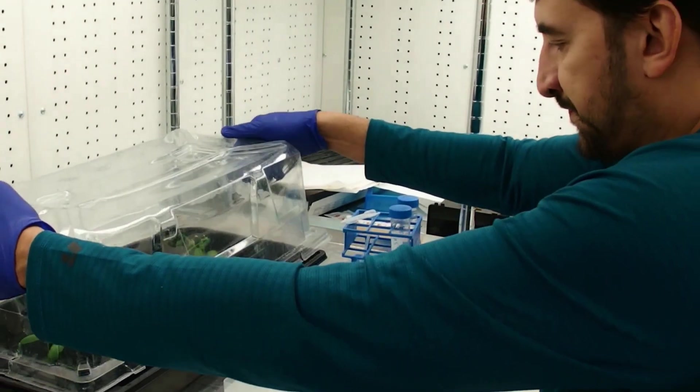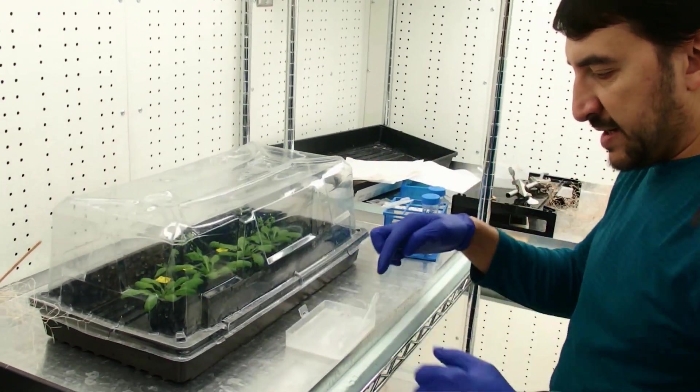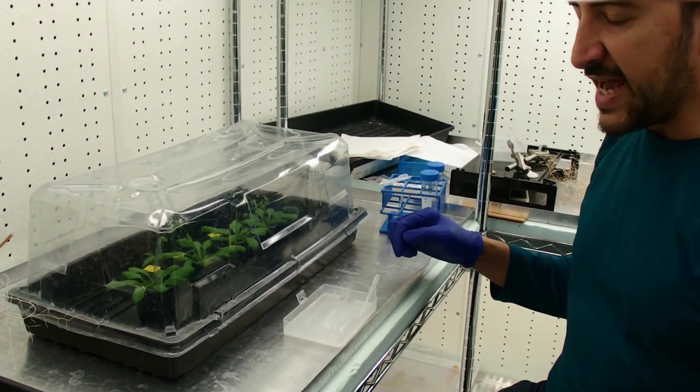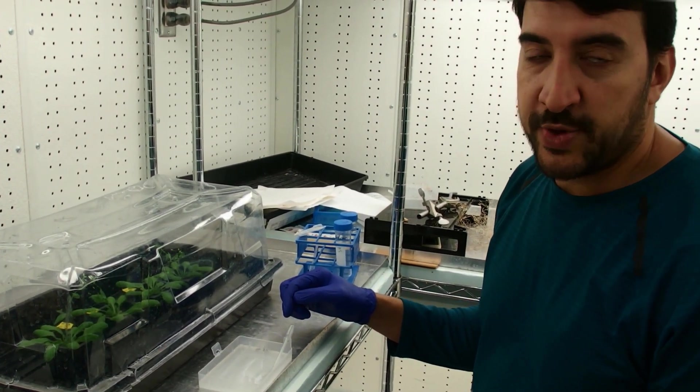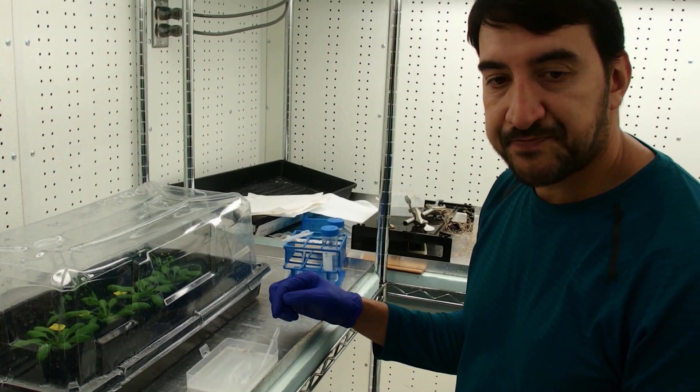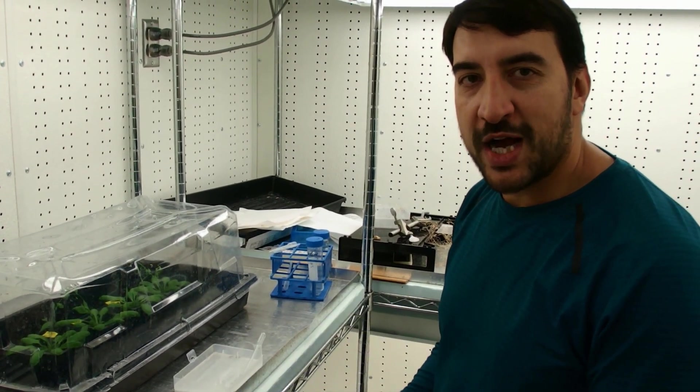The other thing that we need to do is we have this Agrobacterium solution right here. We need to add some bleach to that, sterilize it and then throw it down the sink. Thank you for watching.